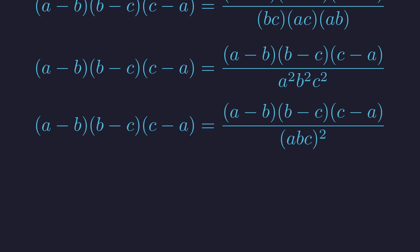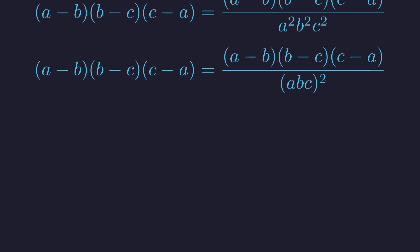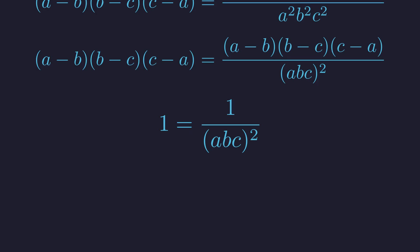Now for the magic. Since we know A, B, and C are distinct, this entire term is non-zero. That means we are allowed to divide both sides by it. Dividing both sides leaves us with this beautifully simple equation: 1 equals 1 over the square of ABC.